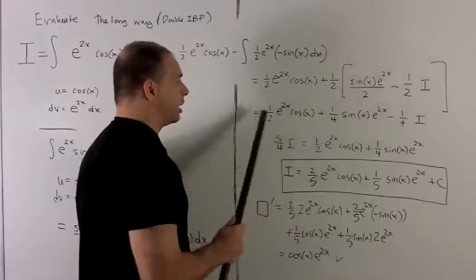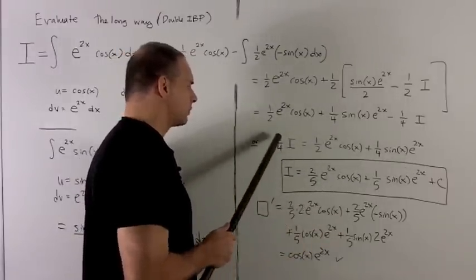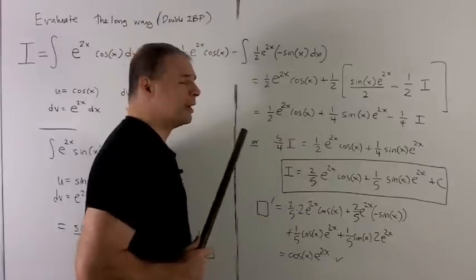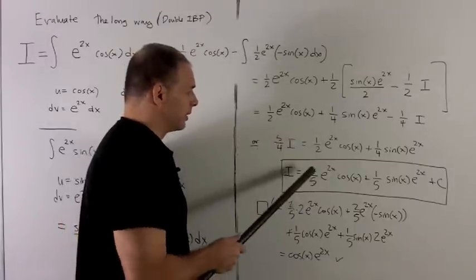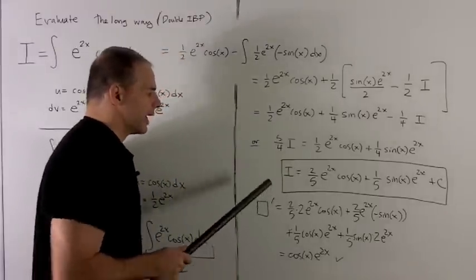I just bring down what's here into this line. To get rid of the 5 fourths, we multiply through by 4 fifths, leaving me with a 2 fifths and a 1 fifth. So that's my answer.